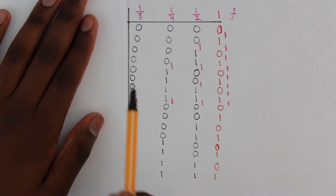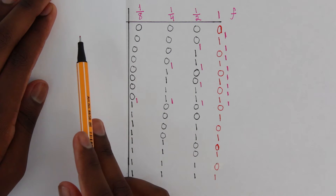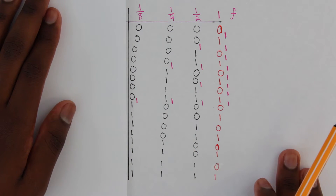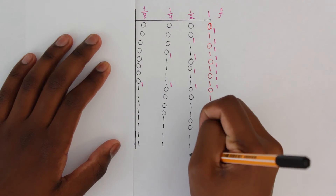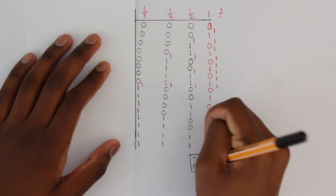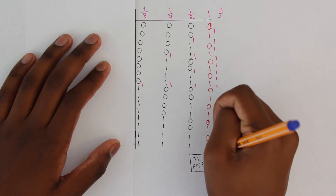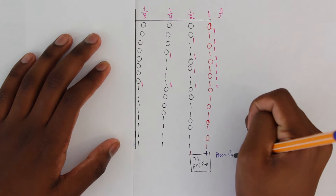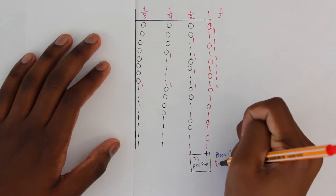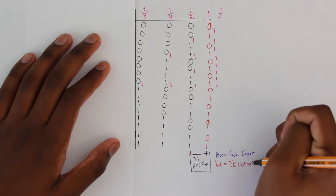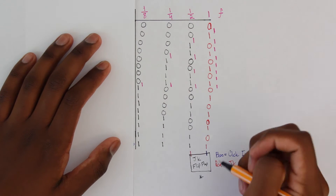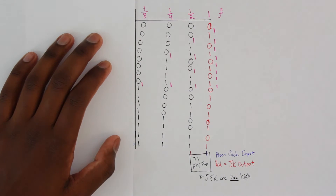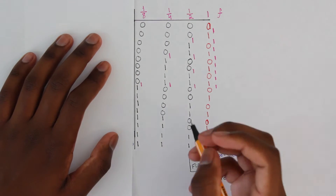We only need four bits because we have a four-bit address. Looking at everything as a whole, each digit is a clock pulse whose frequency is one-half of the digit before it. From the last video, we know a JK flip-flop can reduce frequency by half — so for one-eighth we need three JK flip-flops, and for one-fourth we need two.